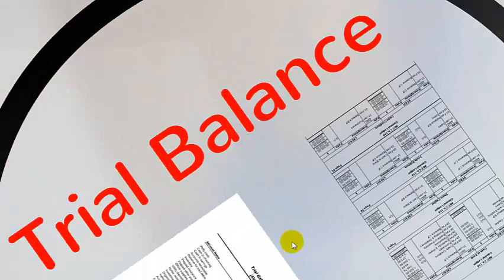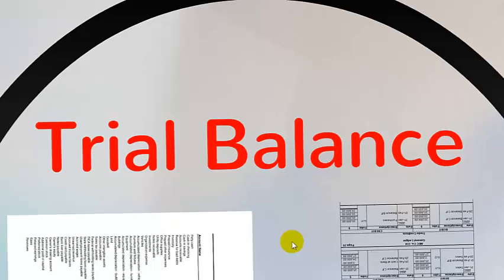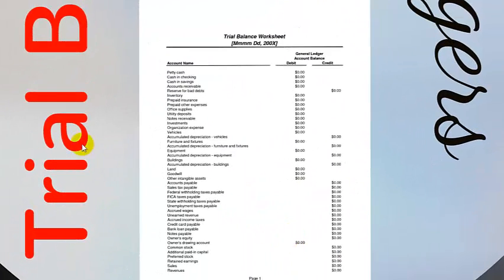Once we have reached the end of the month and done our posting to the ledgers, we want to summarise all the final balances in a thing called a trial balance. Here is a pro forma of a trial balance so we can work out what the final balances are, and this forms the basis to start our end of period reporting.